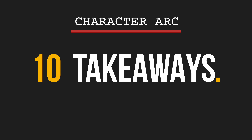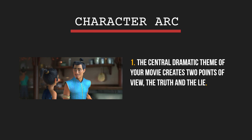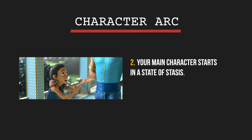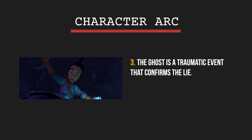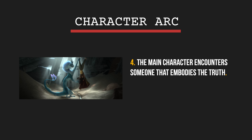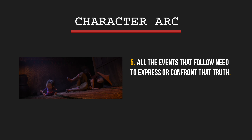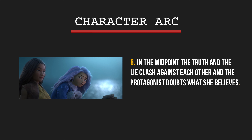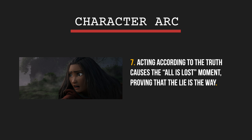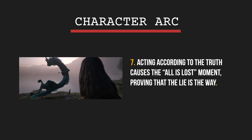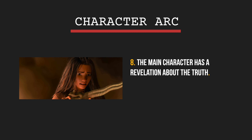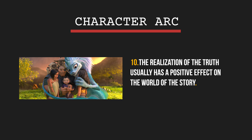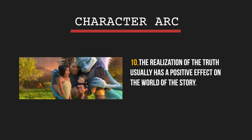Now let's focus on 10 takeaways you can apply to your script. The central dramatic theme of your movie creates two points of view — the truth and the lie. Your main character starts in a state of stasis. The ghost is a traumatic event that confirms the lie. The main character encounters someone that embodies the truth. All the events that follow need to express or confront that truth. In the midpoint, the truth and the lie clash against each other and the protagonist doubts what she believes. Acting according to the truth causes the 'all is lost' moment, proving that the lie is the way. But then, the main character has a revelation about the truth. The protagonist has to put her new belief into action and risk it all. The realization of the truth usually has a positive effect on the world of the story.